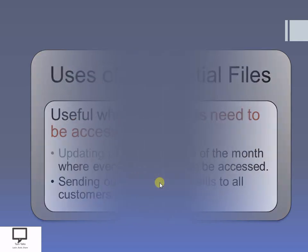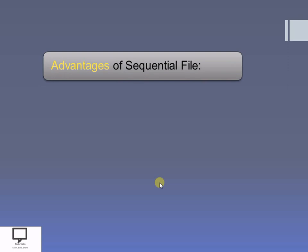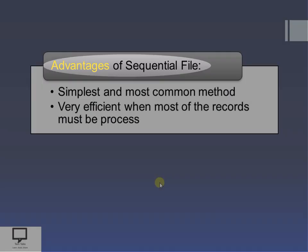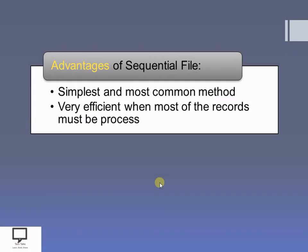Let's move forward to the advantages and disadvantages of the sequential file. For advantages: file handling for the sequential file is very simple, and this method is mostly used. As it is very simple, it can be commonly used. The next advantage is that it is very efficient whenever you want to access all or most of the records. So if you want to access almost all the records, then the sequential file is very efficient.